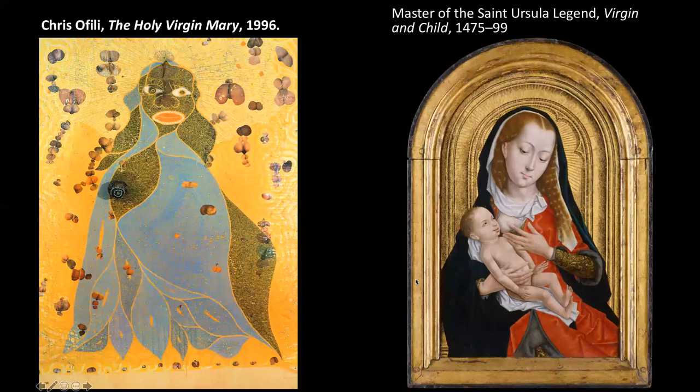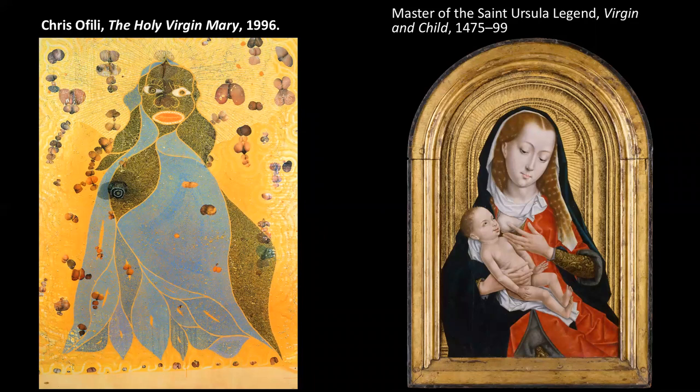His parents are both Christians, he is a Christian, and he grew up going to Catholic school. When he saw paintings like a painting at the DIA of the Virgin Mary breastfeeding Jesus, he saw something interesting and contradictory. As an altar boy, he was confused by the idea of a holy virgin Mary giving birth. He says: 'Now when I go to the National Gallery and see the paintings of the Virgin Mary, I see how sexually charged they are. Mine is simply a hip-hop version.'